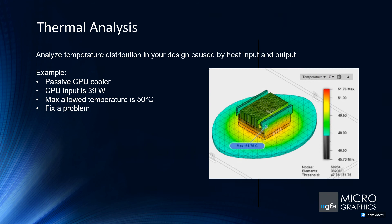Thermal analysis analyzes temperature distribution — both heat inputs and outputs. For example, a passive CPU cooler with a maximum allowed temperature of 50 degrees Celsius. Temperature is very important because PCs run better in cooler environments. That's why server rooms are kept very cold — as components heat up, they'll naturally shut down because they can't operate at those temperatures. In my example, the maximum reached is 51.76 degrees, which is not allowed, so I'd need to change the design — maybe the material or add another heat sink.